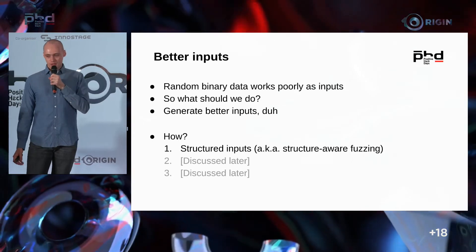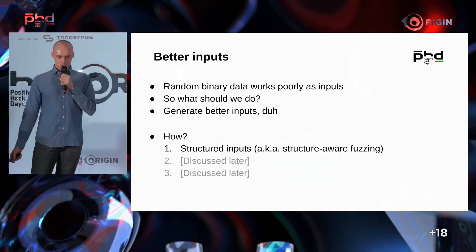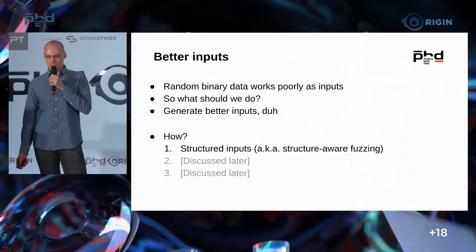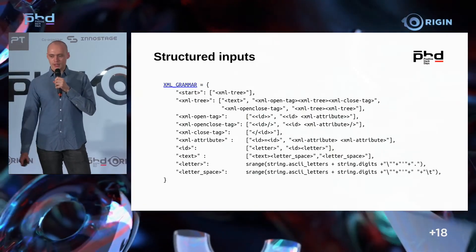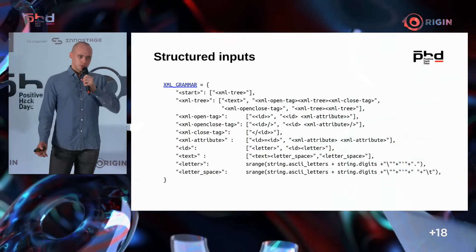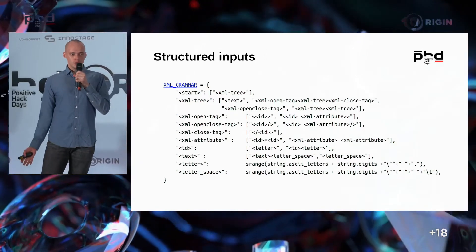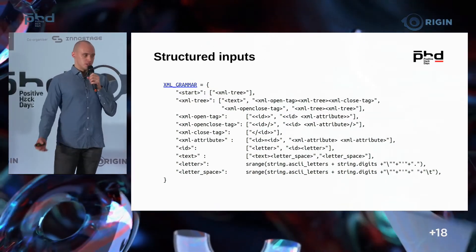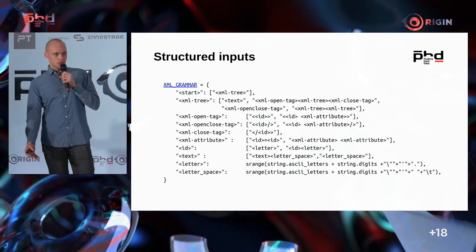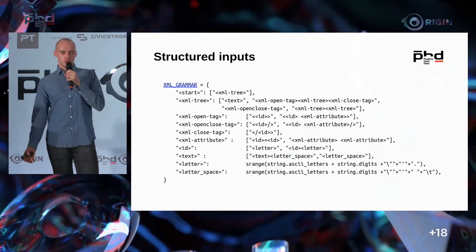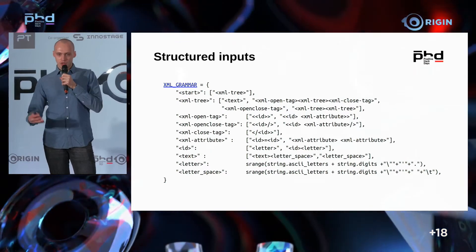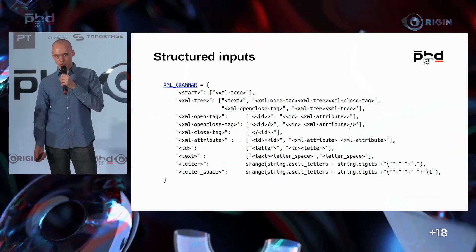We need to find a way to generate better inputs. The simplest approach is structure-aware fuzzing. In this case, we implement some grammar for XML files — an XML file is a sequence of XML tags. Instead of generating random bytes, we generate random tags as part of our grammar, which can include the requirement that the valid file starts with an XML tag.